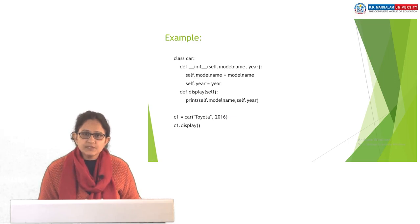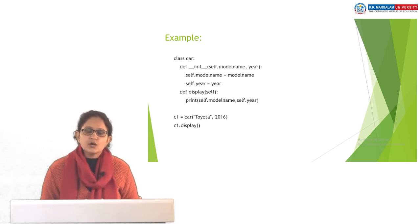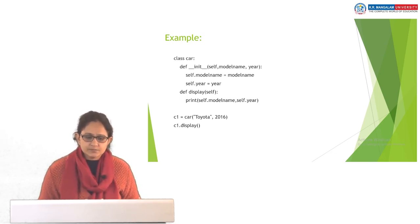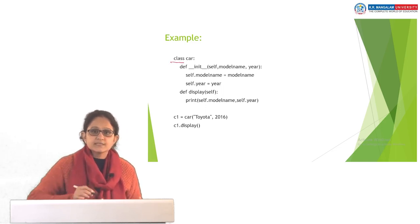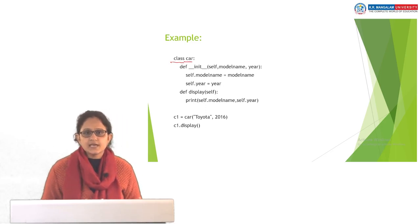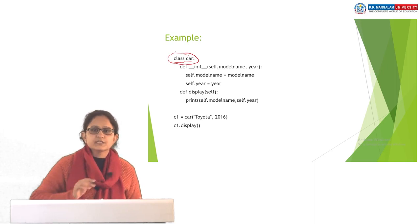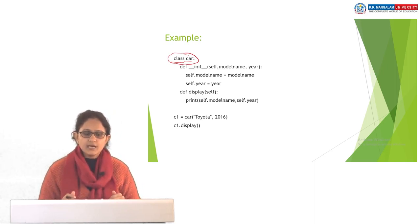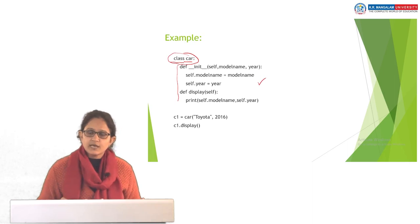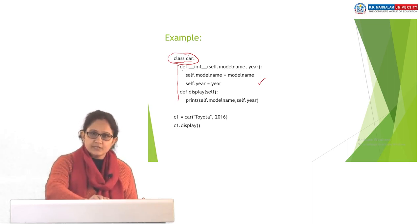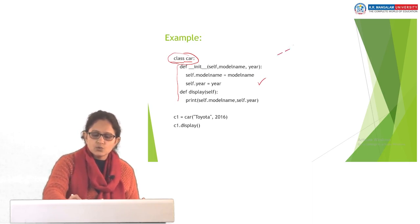Now with a simple example we'll see how we can create classes in Python, how we mention attributes, how we define methods within the class, how we create objects, and then with the help of objects we can call the attributes and methods of a specific class. For creating a class we use the class keyword. Car is the class name, followed by a colon. Whatever you mention under a class needs to be under a specific indentation. This is the method of a class.